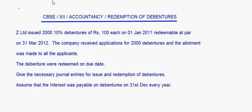Let's take a question on redemption of debentures. Z Limited issued 2,000 10% debentures of rupees 100 each on 1st January 2011, redeemable at par on 31st March 2012. The company received applications for 2,000 debentures and allotment was made to all applicants. The debentures were redeemed on the due date. Interest was payable on 31st December every year.